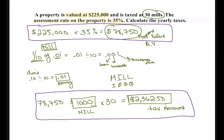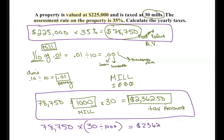Here's a secret: if you take $78,750 and multiply it by 30, but divide the 30 by 1,000 instead of dividing the $78,750 by 1,000, you get exactly the same answer. You just have to divide one of the numbers by a thousand. If you can remember 'thousand for mill,' you're golden.